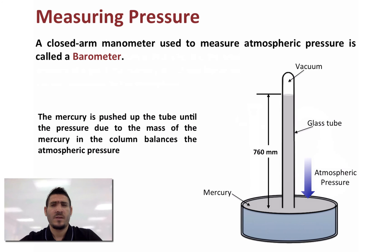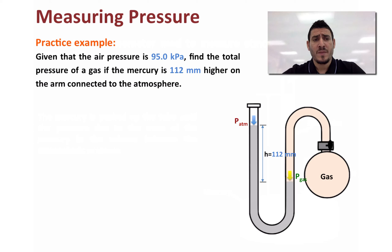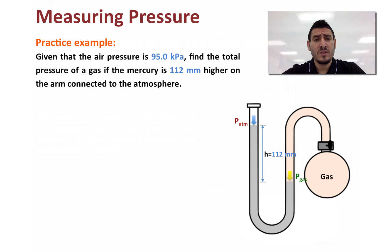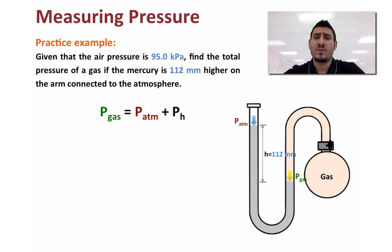Let's discuss a practice example on manometers. Given that air pressure is 95.0 kilopascals, find the total pressure of a gas if the mercury is 112 millimeters higher on the arm connected to the atmosphere. The atmospheric pressure is 95.0 kPa and the height difference is 112 mm. The pressure of the gas can be calculated using the expression: pressure of gas equals atmospheric pressure plus P_h, where P_h is the pressure due to the difference between the mercury levels.